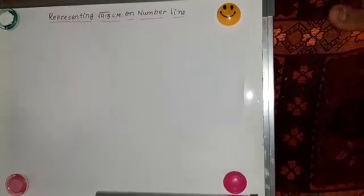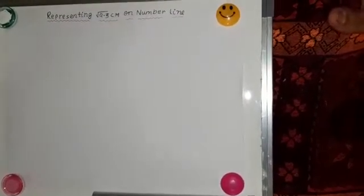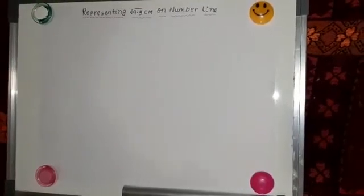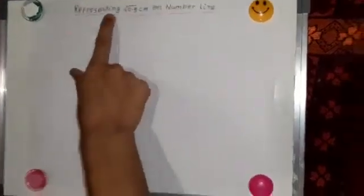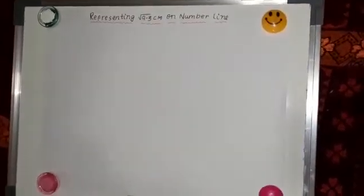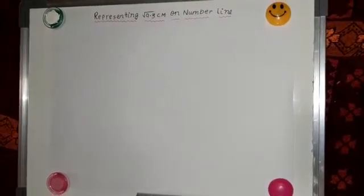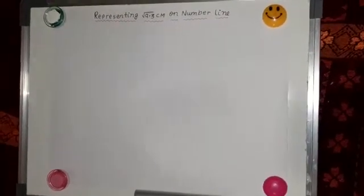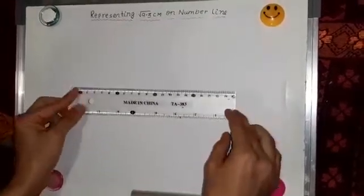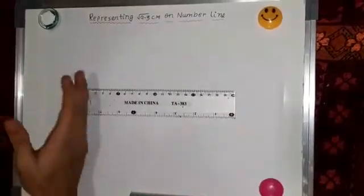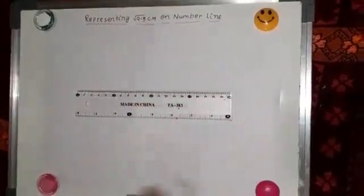So let's start how to make root 9.3 on number line. You can see the question representing root 9.3 on the number line. So let's begin our video. The first thing you need is a scale that has the numbers visible. Then put the scale over the paper. You can put it on this side or this side. I'm just gonna put in the middle for you.